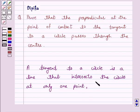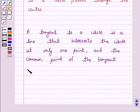And the common point of the tangent and the circle is called the point of contact.